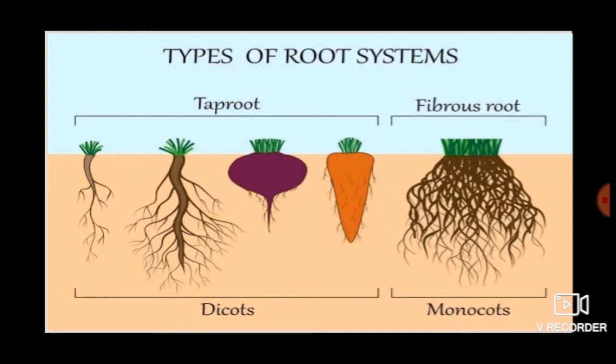mustard, and beans. The fibrous root system is composed of a bunch of small branching roots that grow outward from the plant. They do not go deep into the soil. Grass, rice,